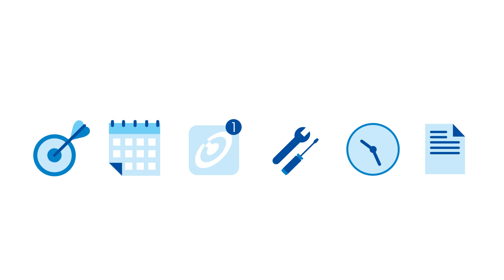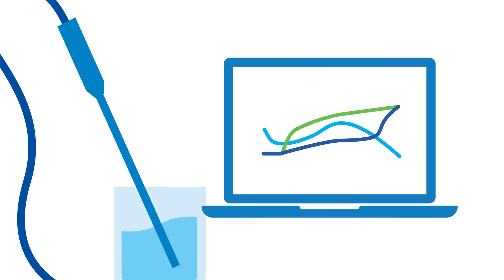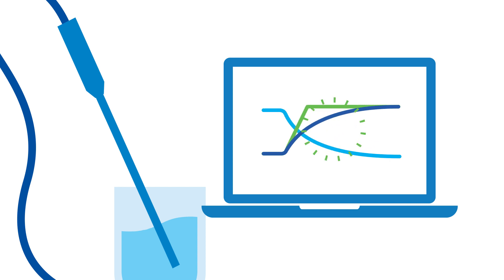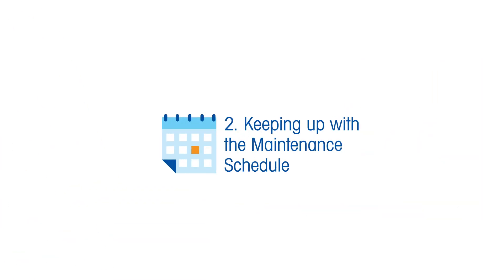Number one: validate data accuracy. It's important for someone to periodically verify that your instrument is performing within specification. This ensures that scientific conclusions are based on accurate and reproducible data sets.